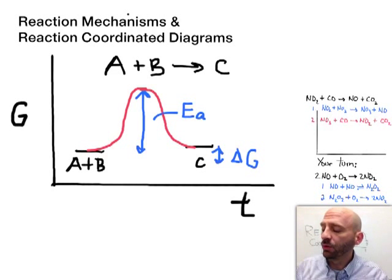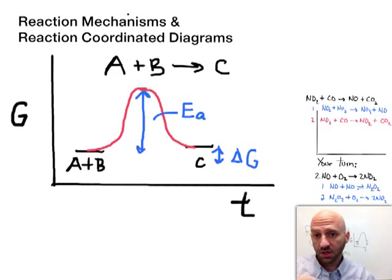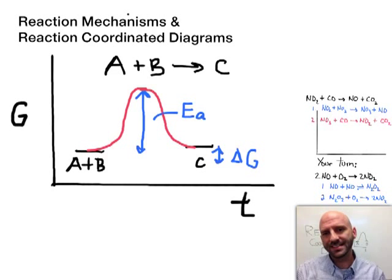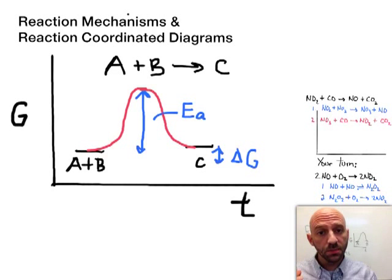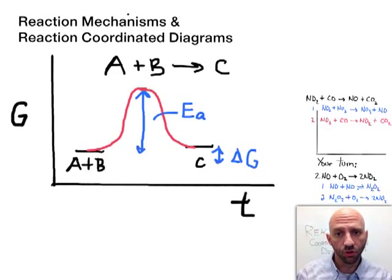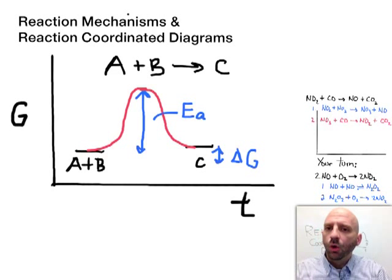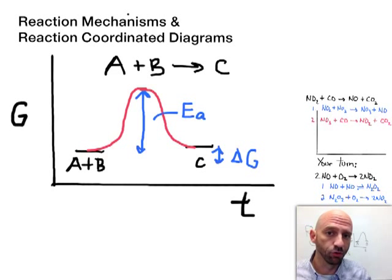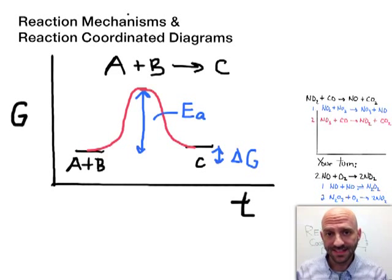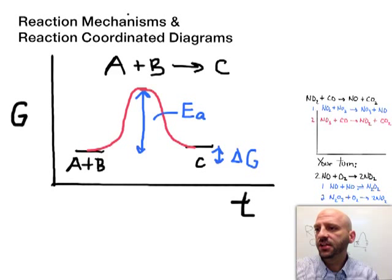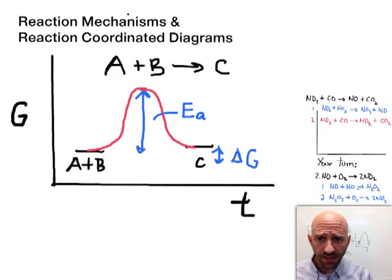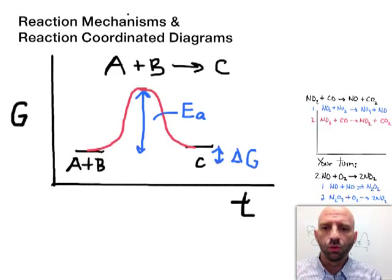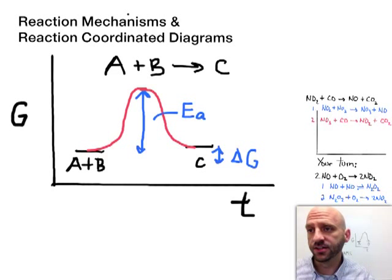We're going to take the idea of reaction mechanisms, what we've been learning over the last couple of videos, and tie it together with this idea of a reaction coordinate diagram, which you've seen before but maybe haven't learned all the details about. Here I have an example of a reaction coordinate diagram on the board, and we're going to talk about a hypothetical reaction to start with, as we tend to do.